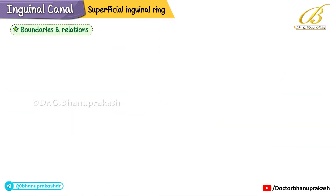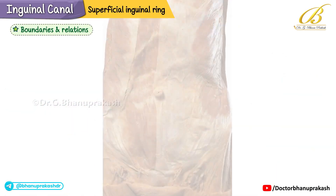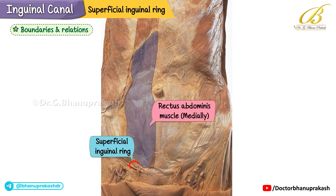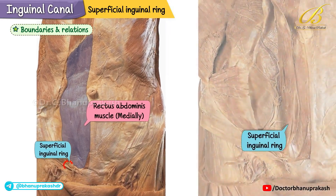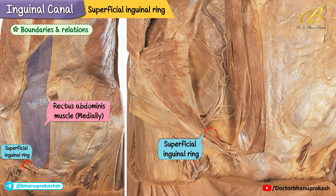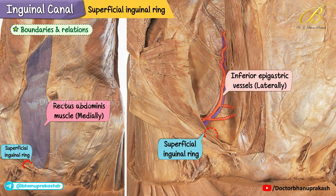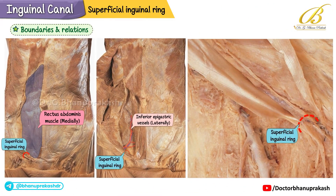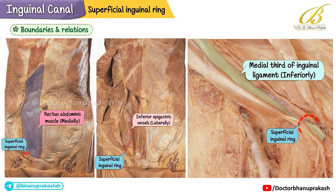Moving on to its boundaries and relations: immediately it is bordered by the inferolateral edge of the rectus abdominis muscle. Laterally it is close to the inferior epigastric vessels. Inferiorly it relates to the medial third of the inguinal ligament.